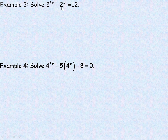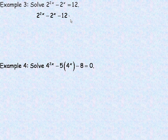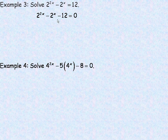The first thing I would do here is, since it actually is a quadratic type, subtract 12 from both sides and rearrange so there's just a zero on the right side, and then 2 to the 2x minus 2 to the x minus 12 on the left. The reason this is a quadratic type is because 2 to the 2x is actually 2 to the x squared, this is a 2 to the x, and this is a constant. So this is like your quadratic term, the linear term, and then the constant.